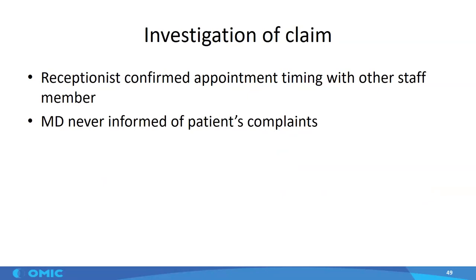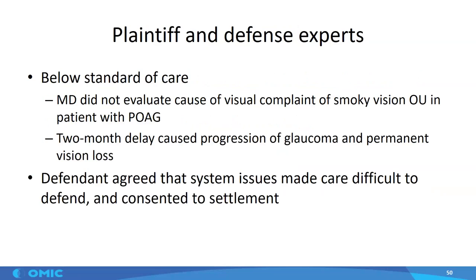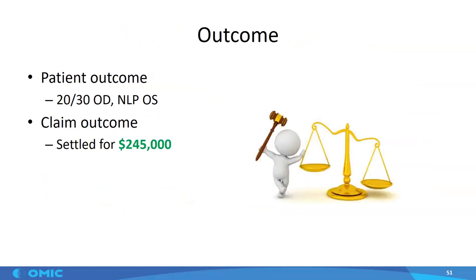You need to include in your written protocols for telephone care the kinds of complaints that should be reported to the physician right away. Both plaintiff and defense experts felt this was below the standard of care — when this patient had visual complaints, he should have been evaluated by a physician. This didn't happen because the physician didn't know about the complaints, but he was held liable because this was his staff. This two-month delay caused progression of the glaucoma and permanent vision loss. The defendant agreed that the system issues made the care difficult to defend and consented to settlement. The patient ended up with no light perception in that eye, the shunt procedure wasn't effective, and the case settled for $245,000.